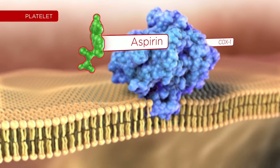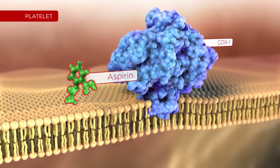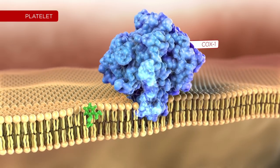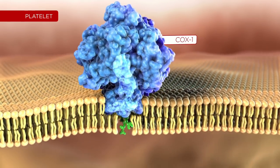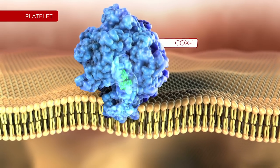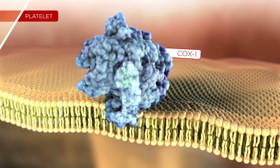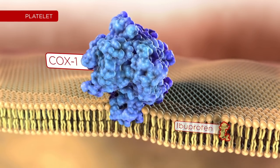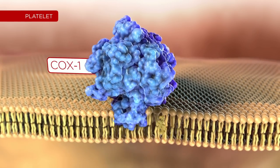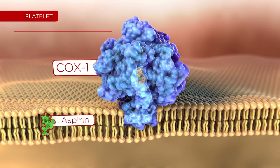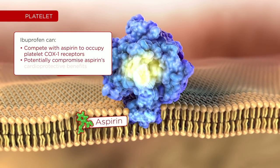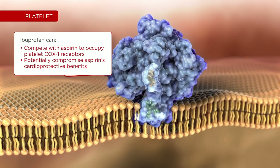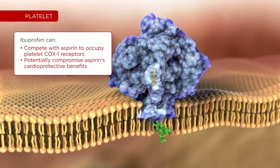Cyclooxygenase 1 plays a role in platelet function. Aspirin interaction with platelet COX-1 receptors mediates the cardioprotective benefits of aspirin therapy. In patients on such therapy, ibuprofen may compete with aspirin to occupy platelet COX-1 receptors, potentially compromising aspirin's cardioprotective benefits.